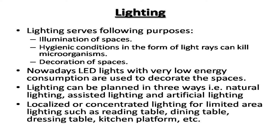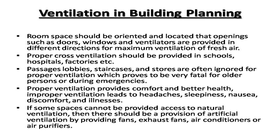Lighting serves several purposes: illumination of spaces, hygienic conditions since light rays can kill microorganisms, and decoration of spaces. Nowadays LED lights with very low energy consumption are used to decorate spaces. Lighting can be planned in three ways: natural lighting, assisted or artificial lighting, and localized or concentrated lighting for limited areas such as reading tables, dining tables, dressing tables, and kitchen platforms.